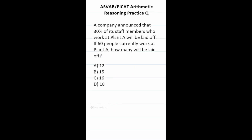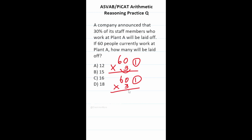This ASVAB PyCat arithmetic reasoning practice test question says a company announced that 30% of its staff members at plant A will be laid off. If 60 people currently work at plant A, how many will be laid off? We multiply 60 by 0.3, the decimal equivalent of 30%. Shifting the decimal right, this becomes 60 times 3 with one decimal to move back. That's 18, so 18 people will be laid off from plant A.